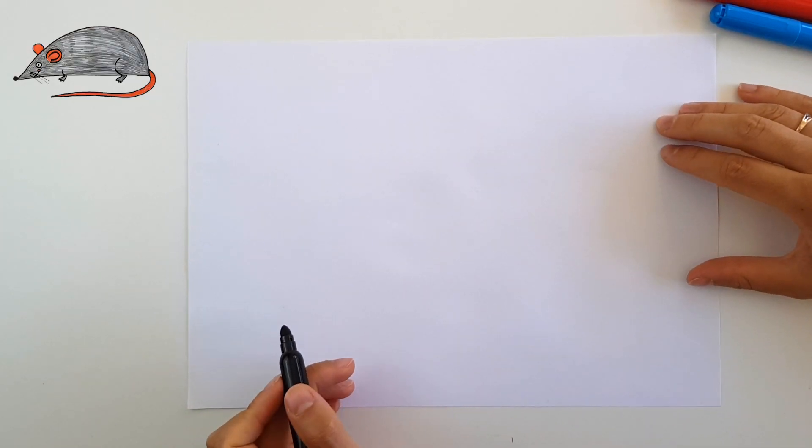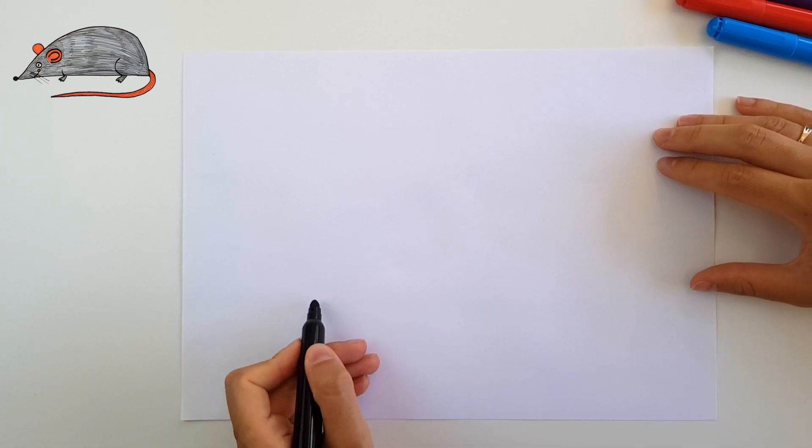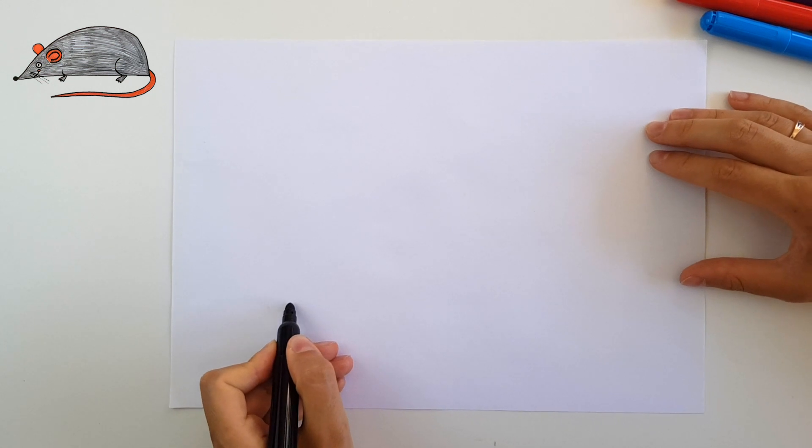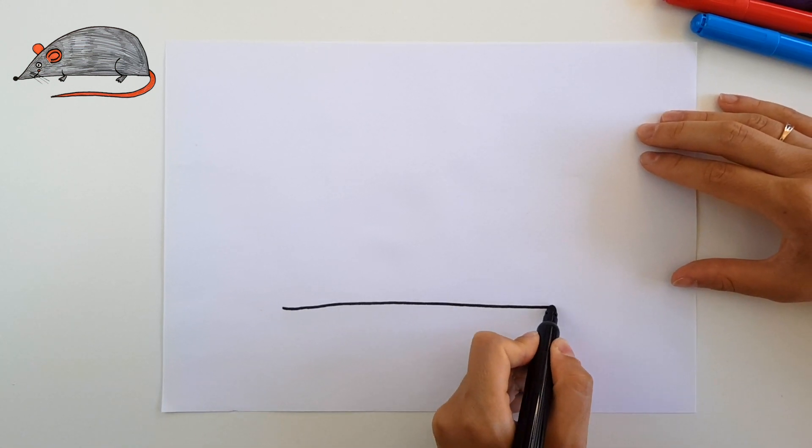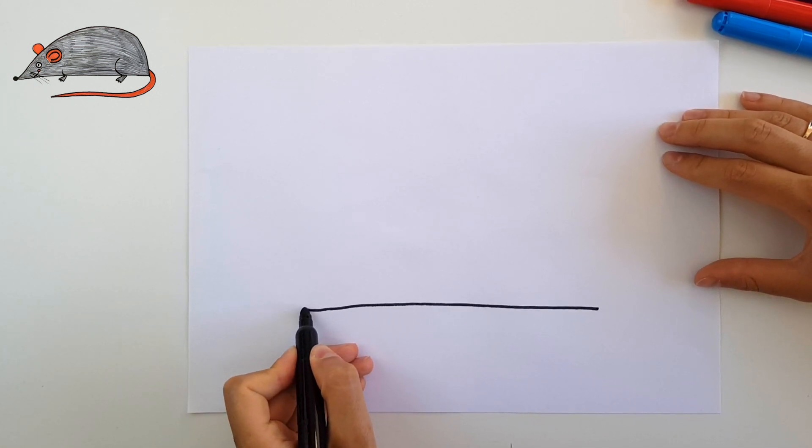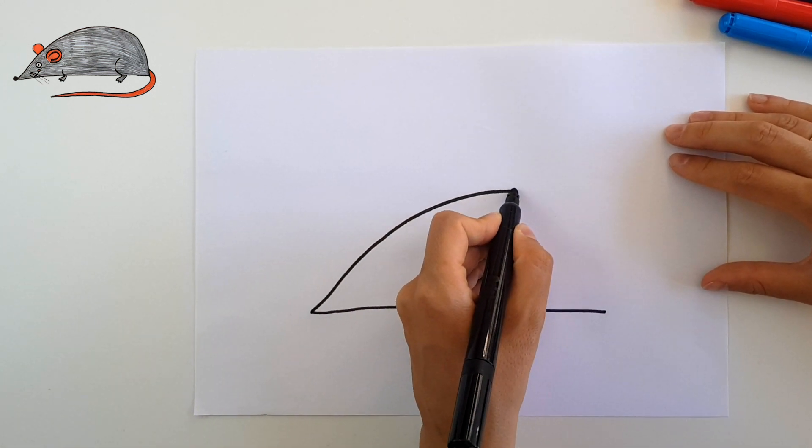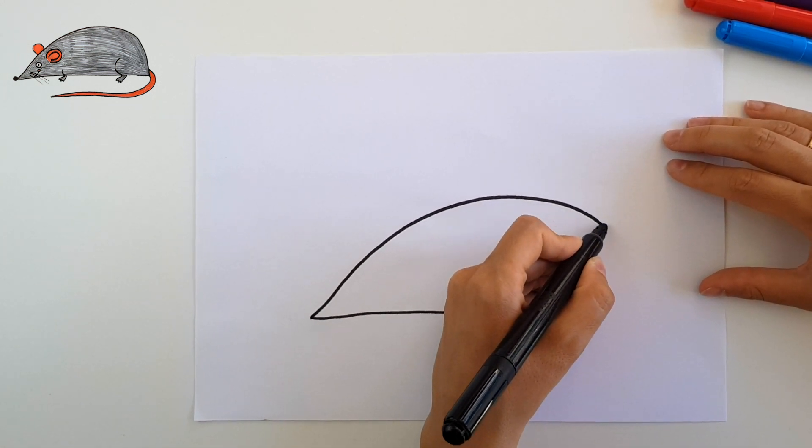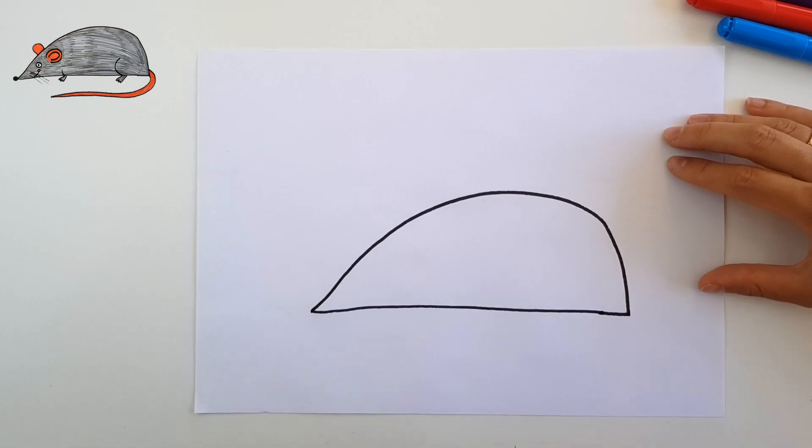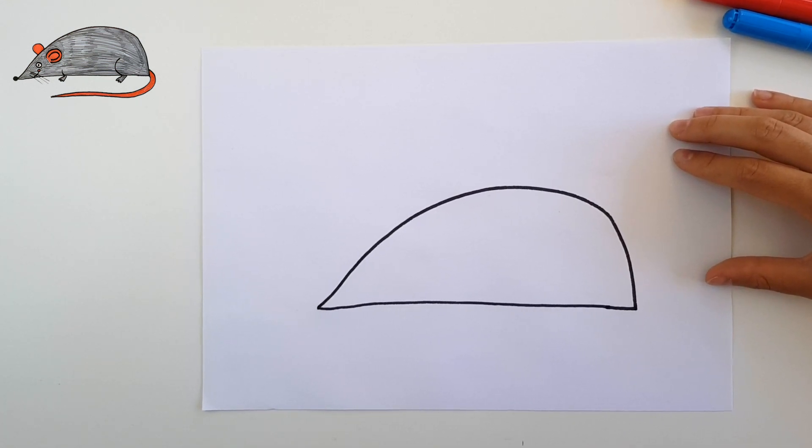Let's first draw the body of our mouse. So first I will start with the bottom. I will just draw one line and now I will continue with the top part of it. And this is the main part of the body.